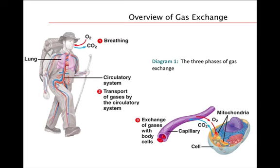Diagram 1 illustrates an overview of the three phases of gas exchange. The first phase, which is breathing, is merely the taking in of oxygen and the releasing of carbon dioxide. Oxygen enters and makes its way to the cells lining the lungs, and carbon dioxide leaves the blood and enters the lungs where it is then exhaled.